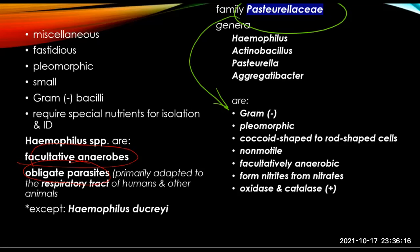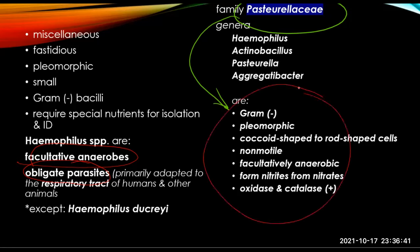One exception is Haemophilus ducreyi, which causes the sexually transmitted disease chancroid. The genera Haemophilus, Actinobacillus, Pasteurella, and Aggregatibacter belong to the family Pasteurellaceae. The family Pasteurellaceae are characteristically gram-negative, pleomorphic, coccoid-shaped to rod-shaped cells. They are non-motile, facultatively anaerobic, capable of forming nitrites from nitrates, and are oxidase and catalase positive.